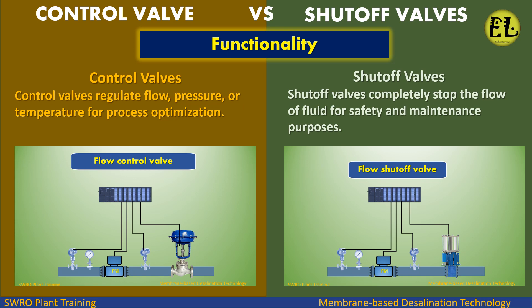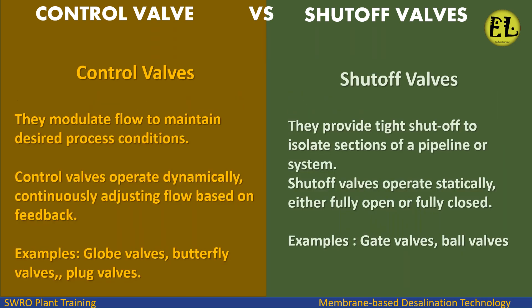Regarding functionality, control valves regulate flow, pressure, or temperature for process optimization. They modulate flow to maintain desired process conditions, operating dynamically by continuously adjusting flow based on feedback. Examples include globe valves, butterfly valves, and plug valves. Shutoff valves completely stop the flow of fluid for safety and maintenance purposes, providing tight shutoff to isolate sections of a pipeline or system.